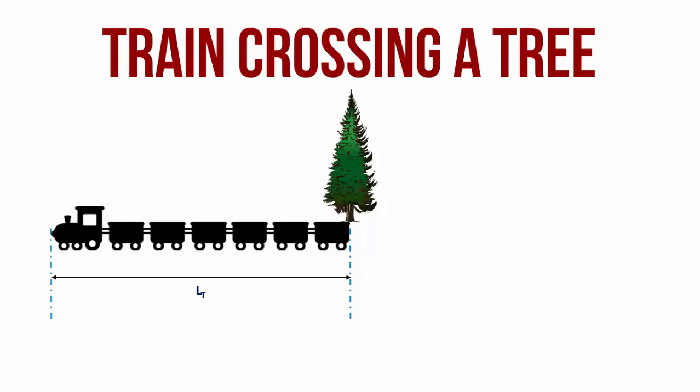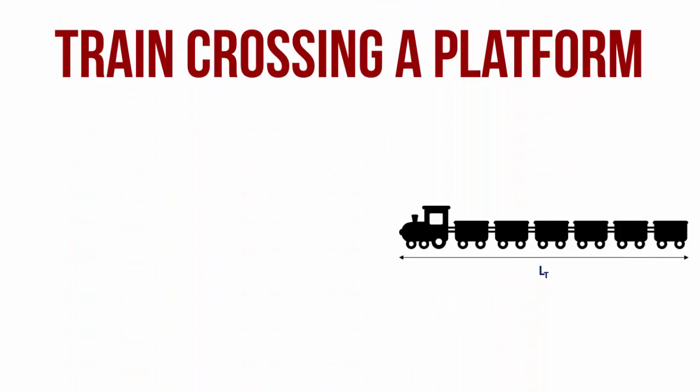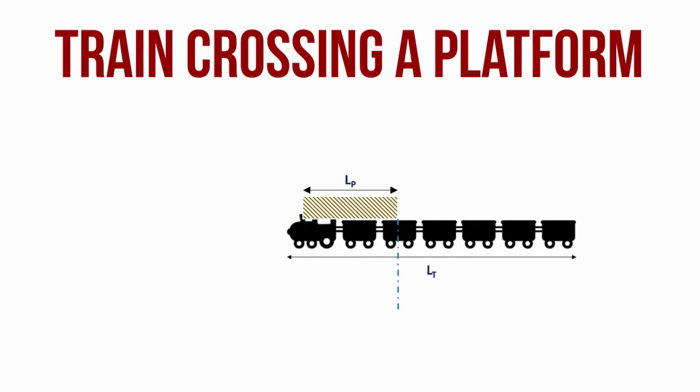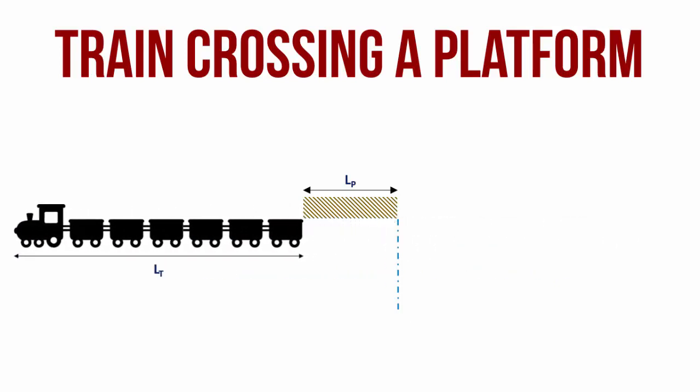For any other kind of vehicle, this might not be that significant. But given that trains are long — some trains can be more than half a kilometer long — the length of the train itself becomes significant to the time, distance, and speed calculations. Similarly, let's look at another case: a train of length LT crossing a platform. This platform itself has a length of LP. If the entire train has to cross this platform, it would have covered a distance equal to its own length plus the length of the platform.